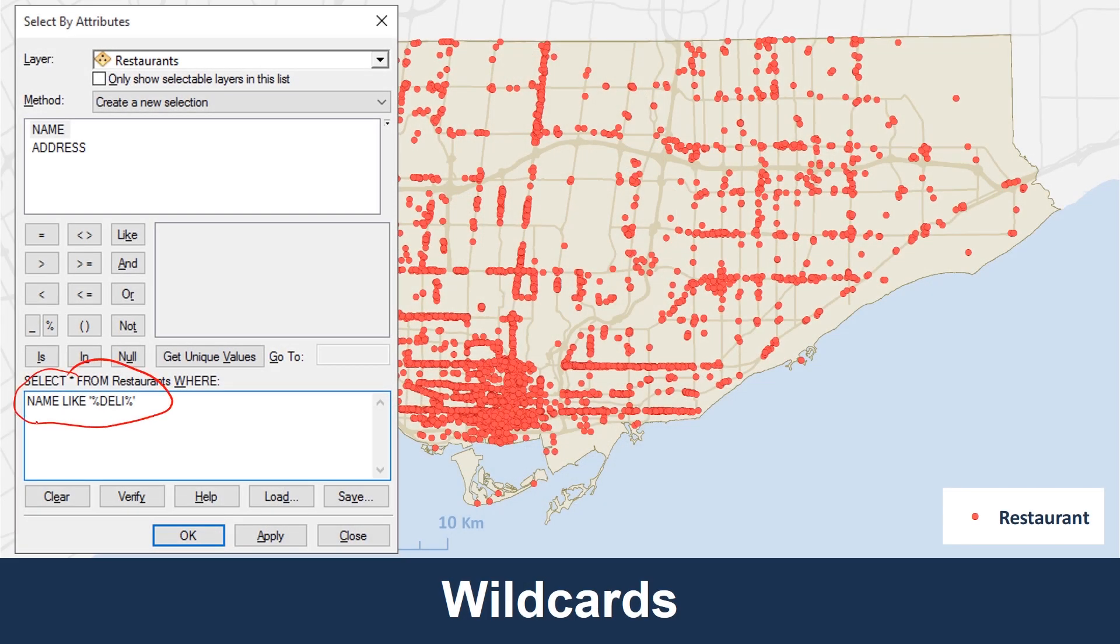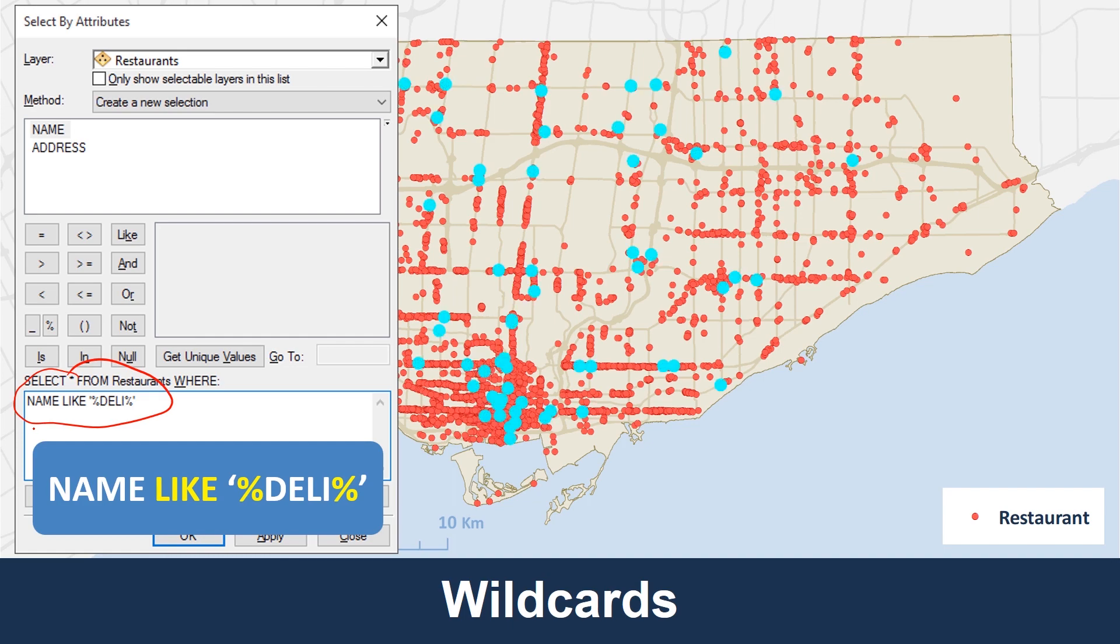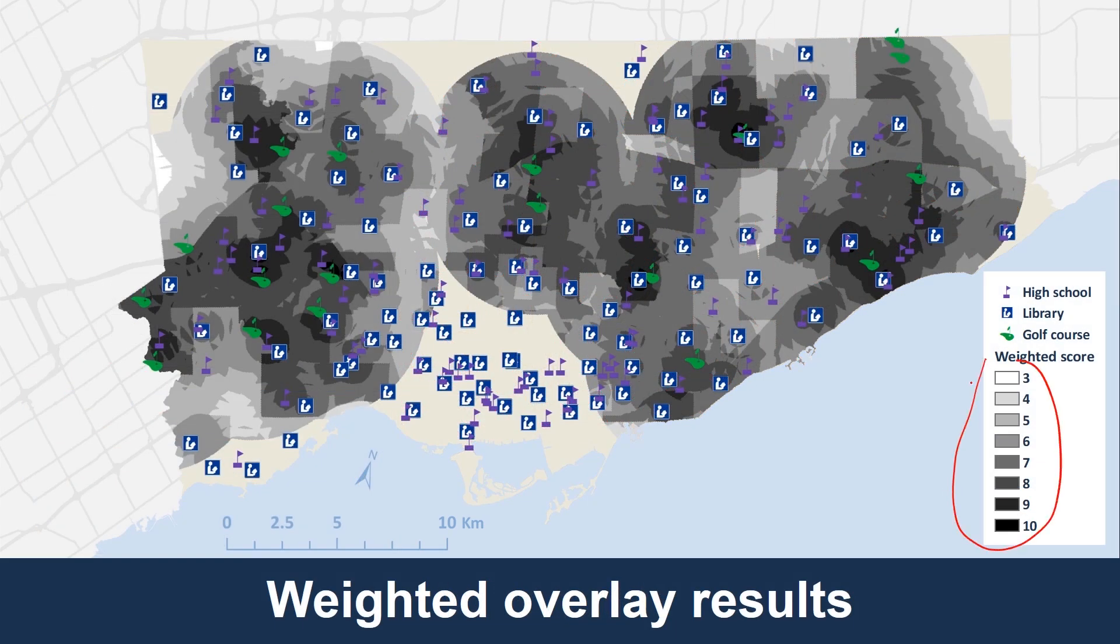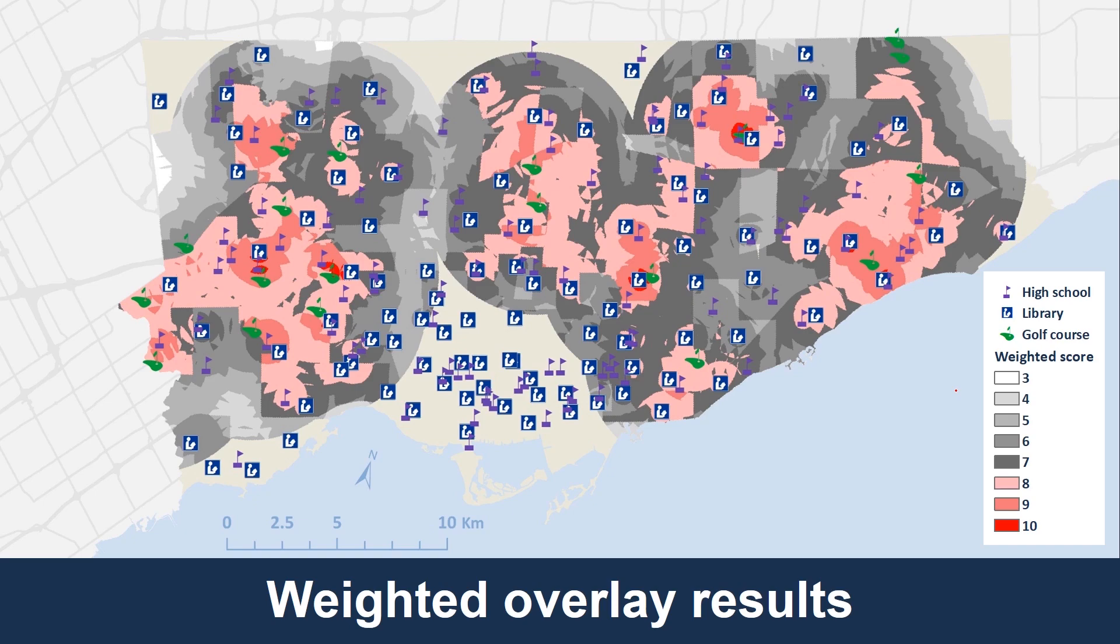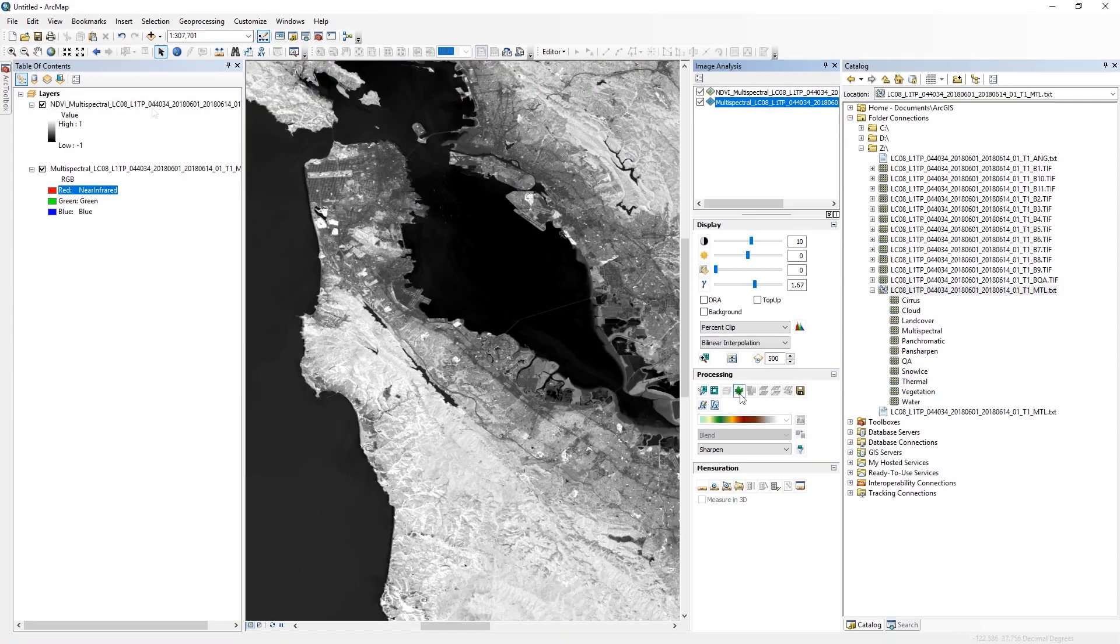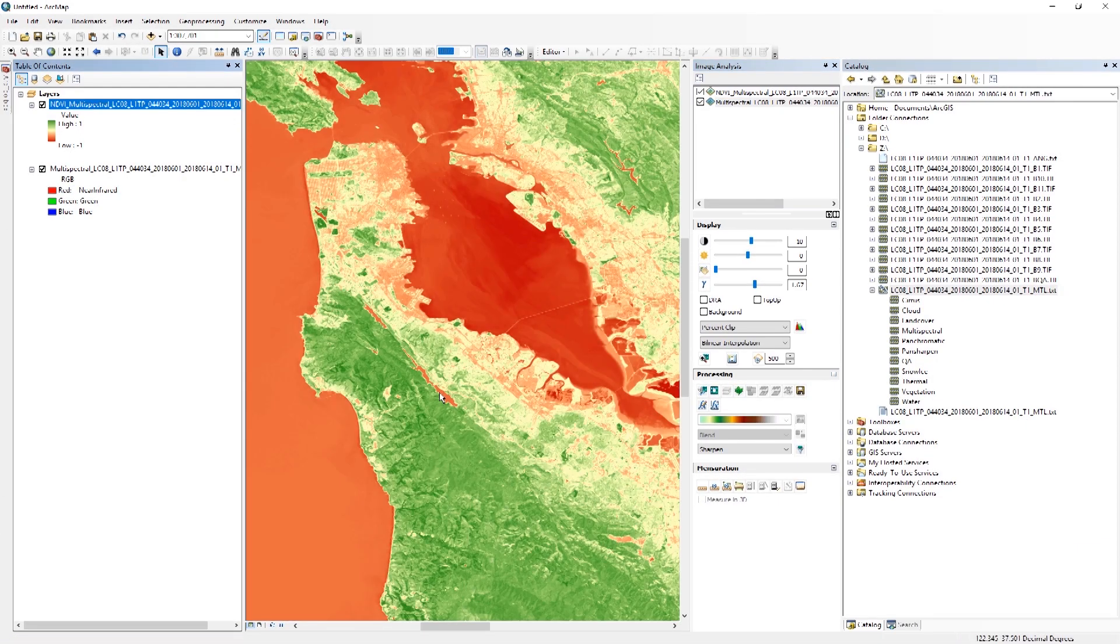In the third course you'll learn how to filter data using queries to find just the parts of the data sets that you need. You'll also learn how to analyze that data using both vector and raster methods, and you'll learn how to download and use satellite imagery, which is a rich source of geographic data.